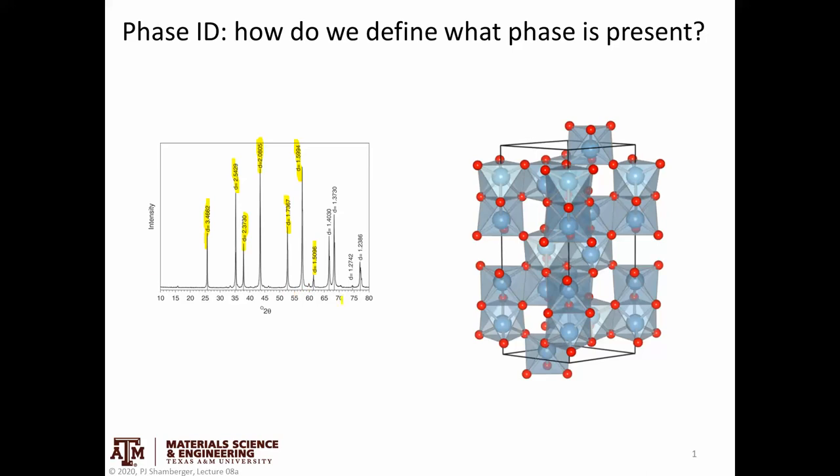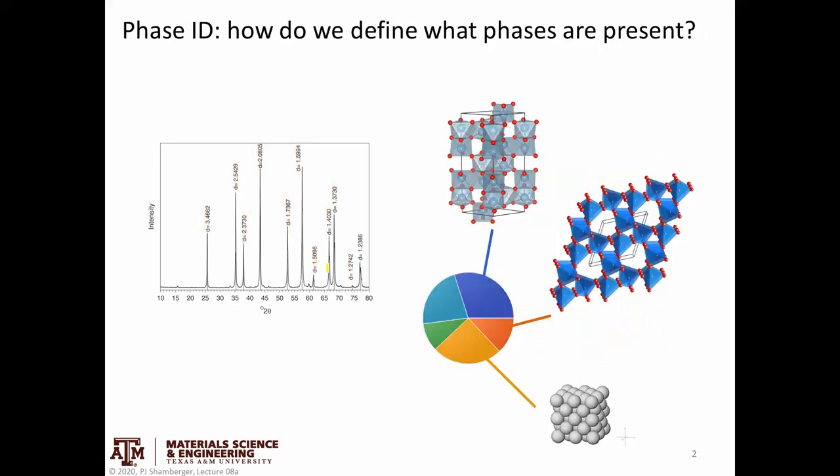If I collect some data like this, it could represent one phase or a couple. But one of the things I'd like to do is say, given these d-spacings, what does it match up with? We can talk through how that happens.